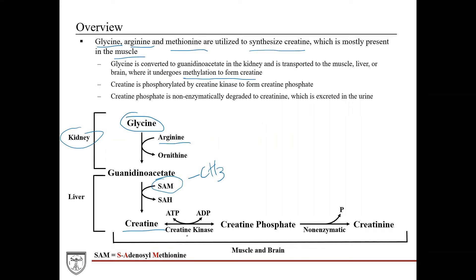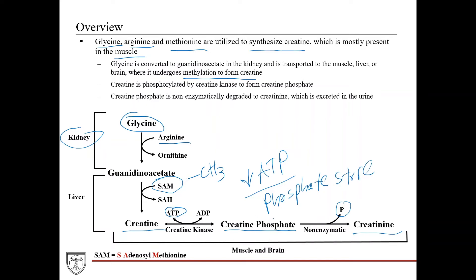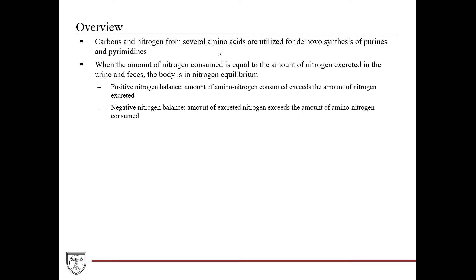Creatine can be phosphorylated by creatine kinase using ATP to give creatine phosphate. Creatine phosphate can undergo non-enzymatic degradation, releasing a phosphate to give creatinine, which is excreted in the urine. During low ATP states — such as in muscle — creatine phosphate acts as a phosphate storage mechanism. Creatine kinase is a reversible enzyme, so it can transfer the phosphate from creatine phosphate back to ADP to regenerate ATP. Carbons and nitrogens from several amino acids are also utilized for de novo synthesis of purines and pyrimidines, that is, nucleic acid synthesis.